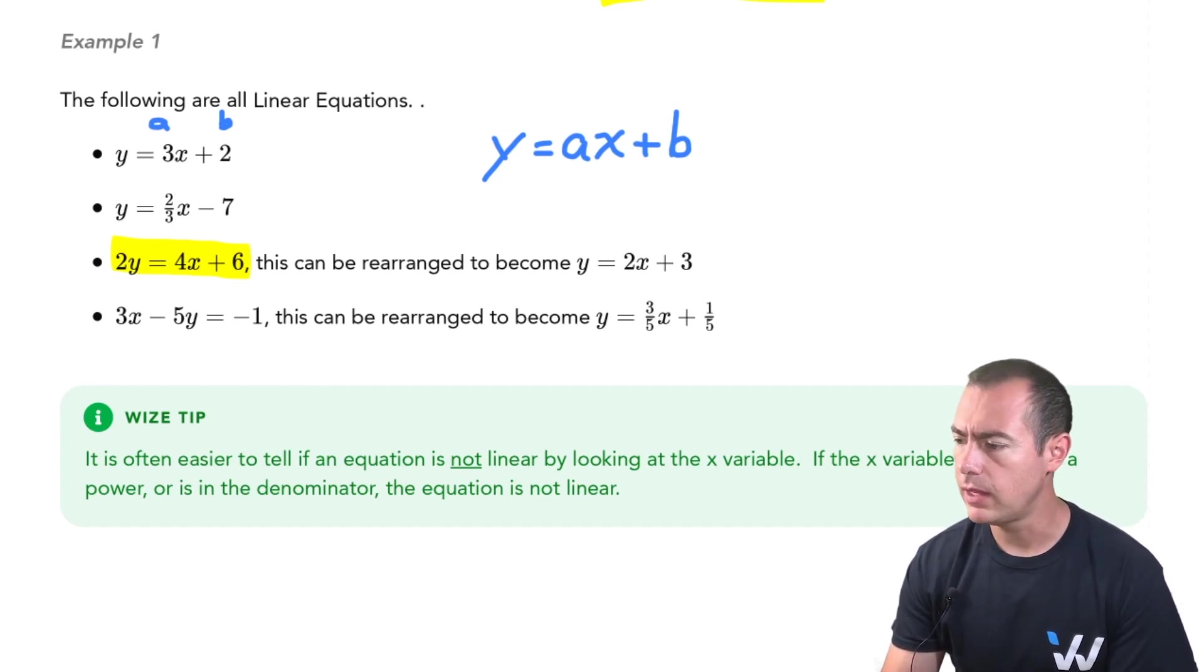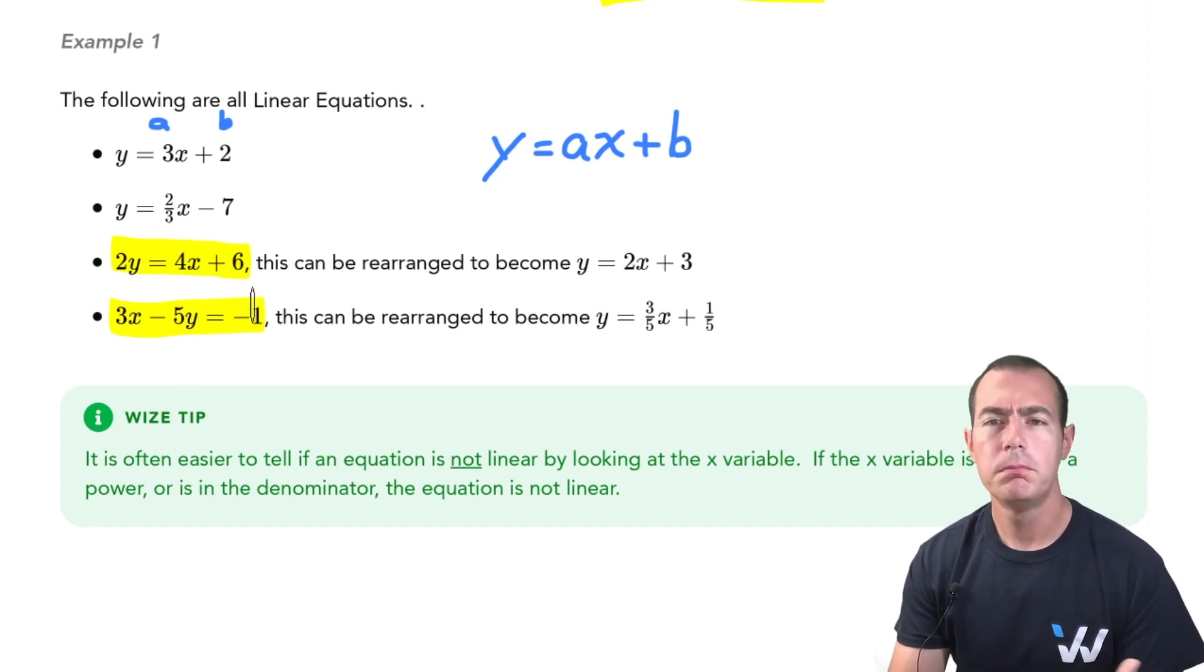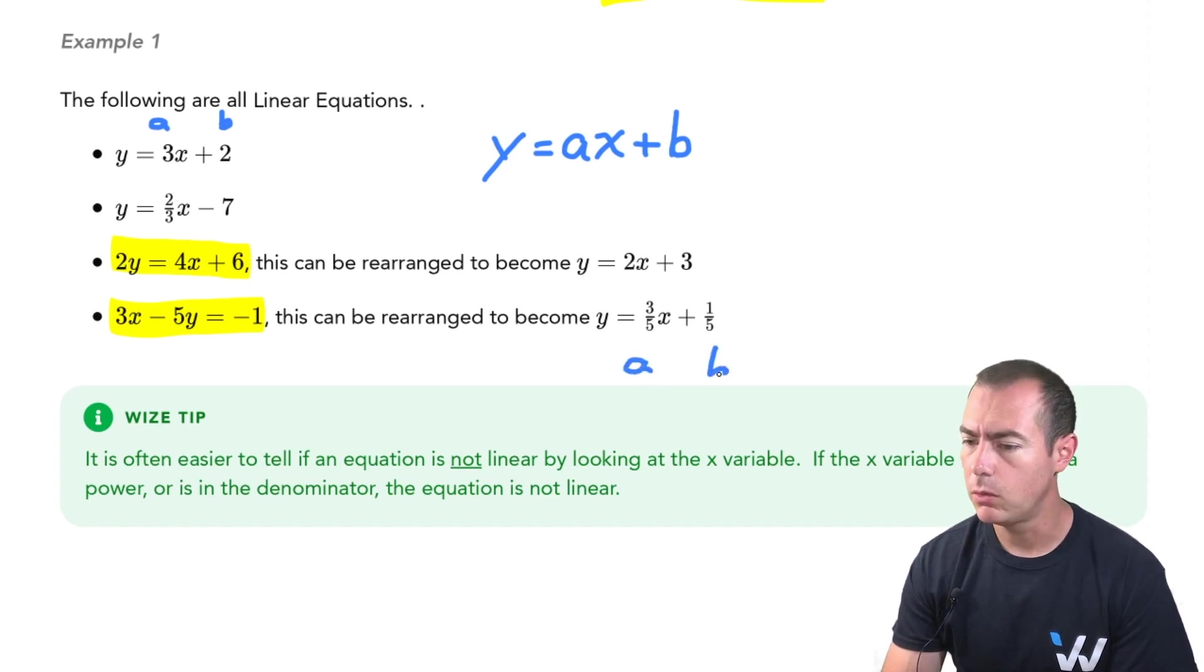Even the next one is in the same boat. It may not look like it's in the proper form yet, but with a little bit of work, a little bit of manipulation, it will turn into the proper form. We can see that the value of a would be like that three fifths and the value of b would be the one fifth.